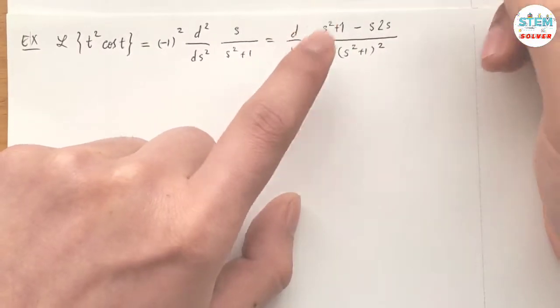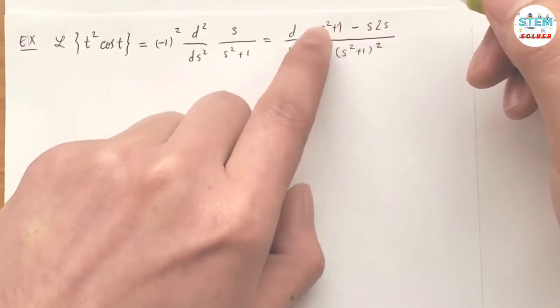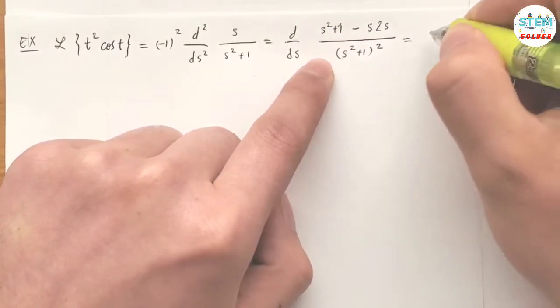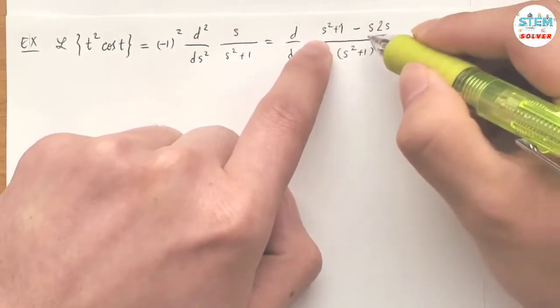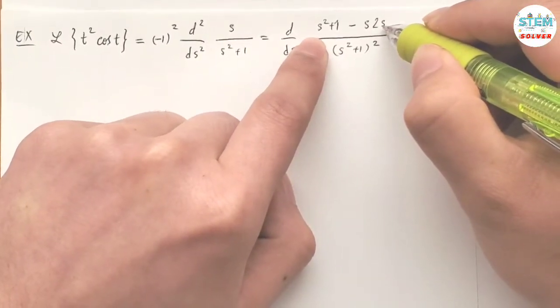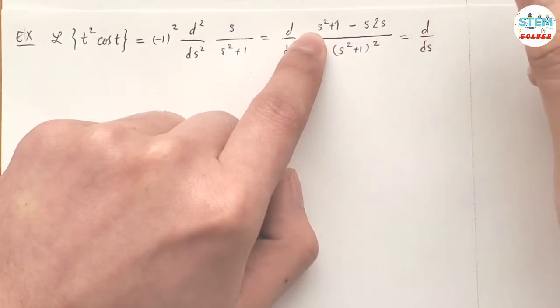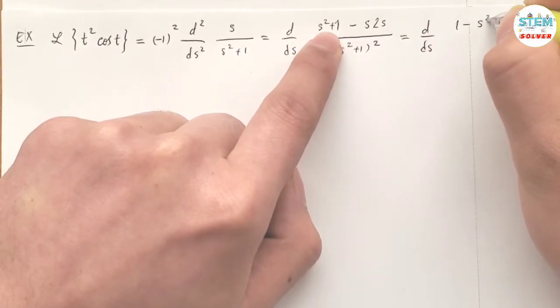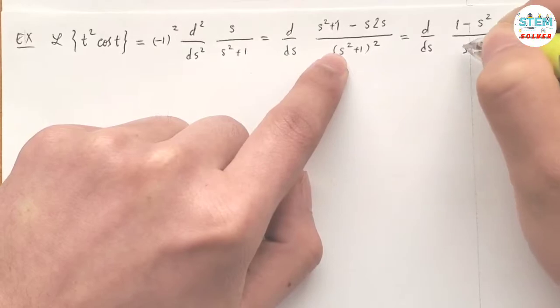Now take the derivative of this again. Before I do that, I'm going to simplify this. Negative 2s² plus s² gives me negative s², so 1 minus s² over (s²+1)².